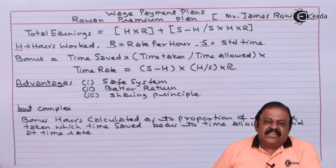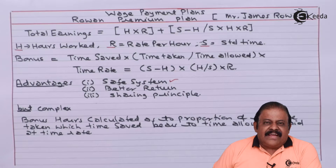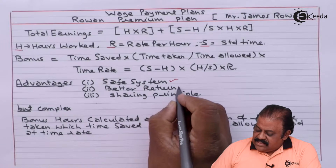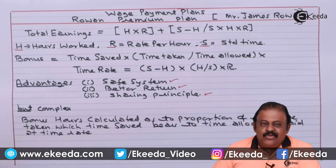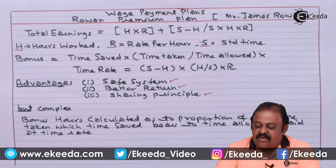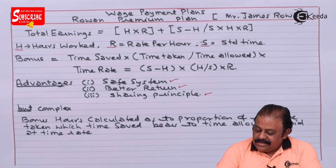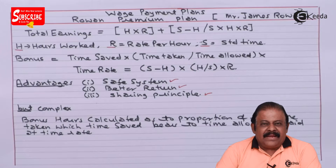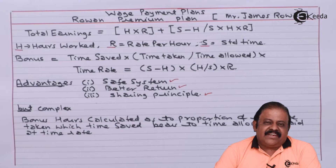Advantages of this method: this method is a safe system — your worker cannot double his earnings. This method gives better returns and uses the principle of sharing the benefit between employer and employee. However, this method is complex in operation, and workers may not like the principle of sharing.